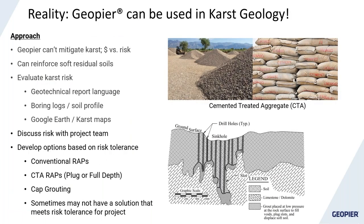So what can GeoPeer do about karst? GeoPeer can't really mitigate karst directly, but we can reinforce those residual soils and offer a risk-versus-reward evaluation. We'll evaluate karst risk on a site — looking at the geotech report, boring logs and soil profile for evidence of active karst, as well as Google Earth and karst maps for historic data — and then have a conversation with the project team.